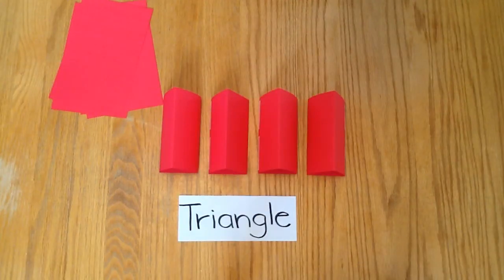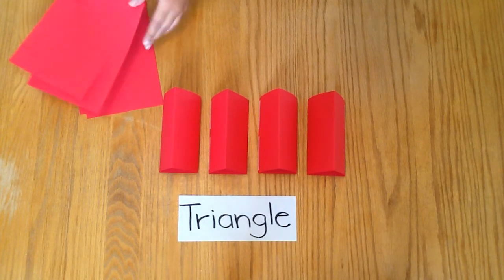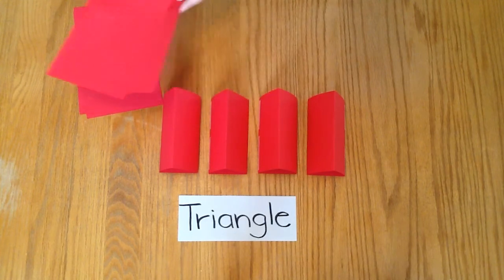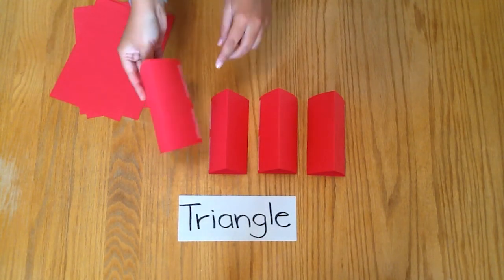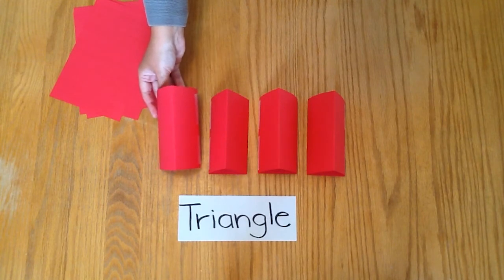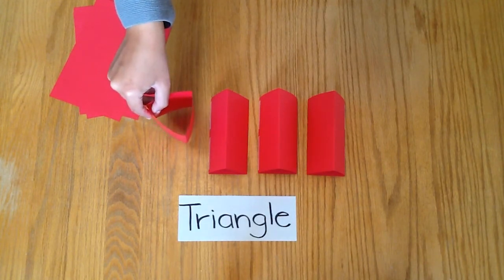The next shape of paper blocks is a triangle. Take your piece of paper, cut it in half and fold it into thirds and secure the ends with tape. Repeat this until you have a total of four triangle paper blocks.